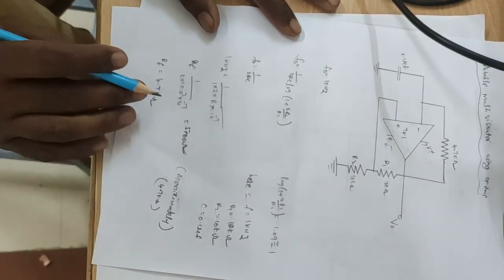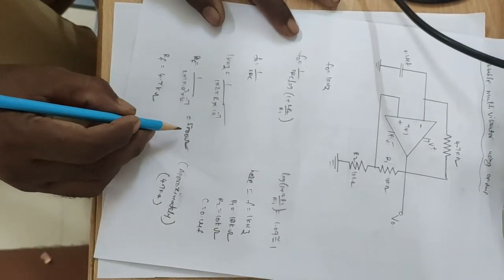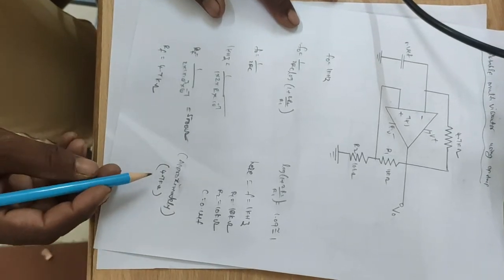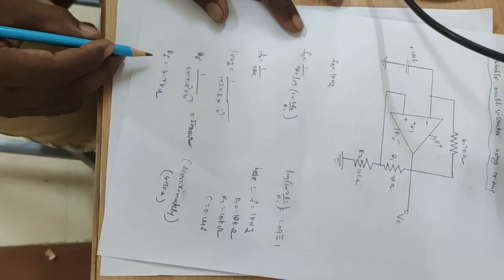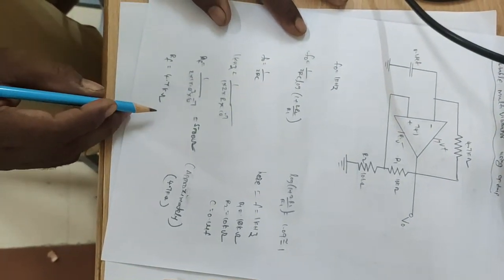But here in lab the 5000 is not available. So approximately you have to take 4.7 kilo-ohms. That is the feedback resistance Rf equal to 4.7 kilo-ohms.